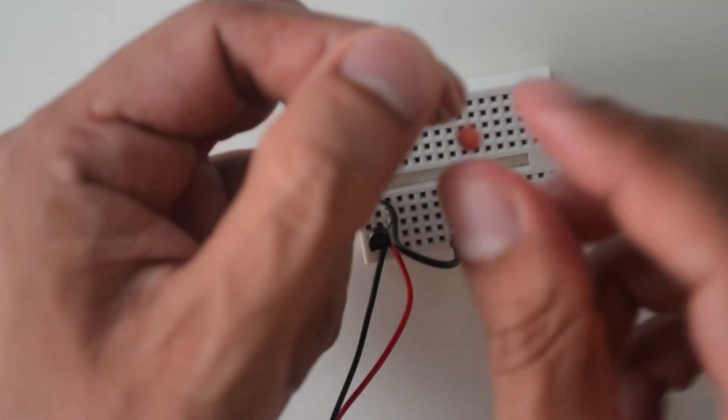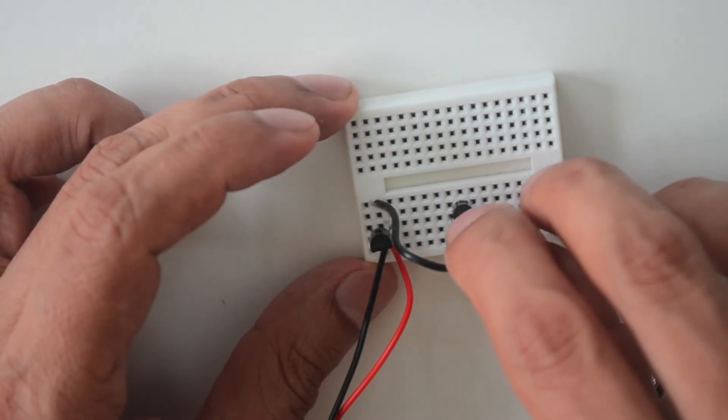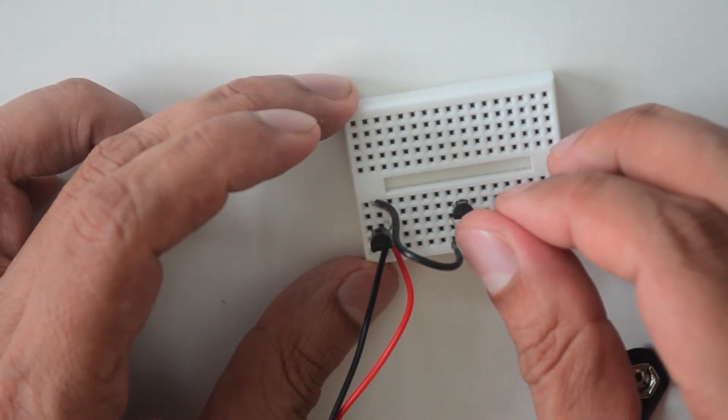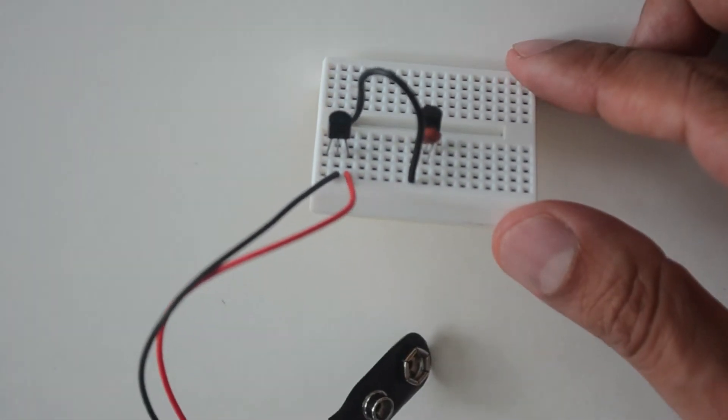Take the capacitor and place it in the two pin holes just below the leftmost and middle legs of the transistor. The capacitor is reversible. Therefore, it does not matter which direction it is placed on the breadboard.